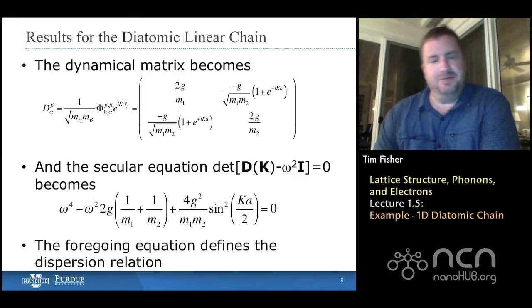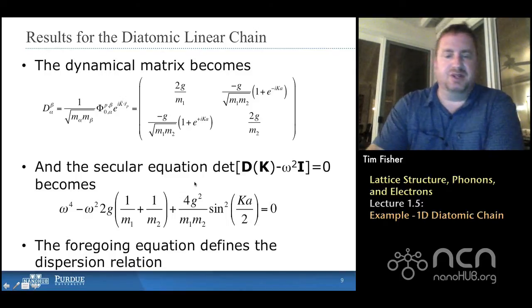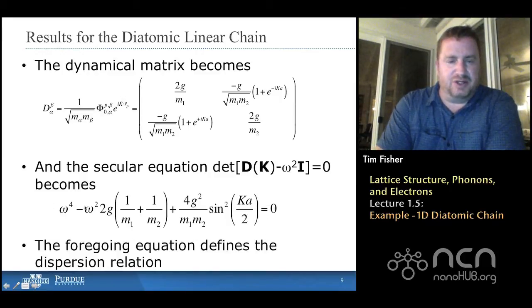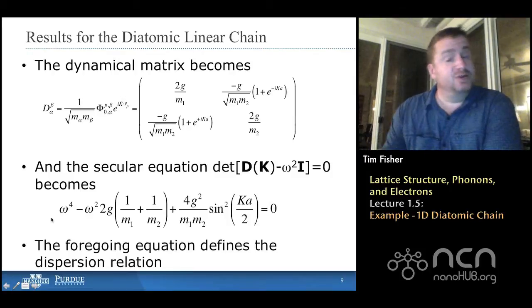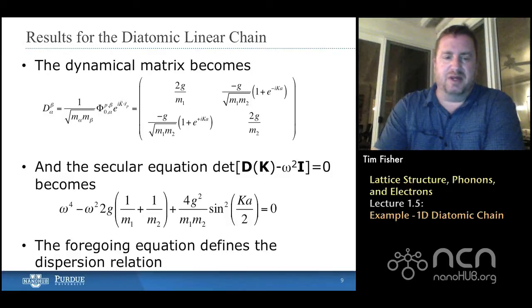What we want to do now is to apply this secular equation. The determinant of the dynamical matrix minus our eigenvalue, that's omega squared, times the identity matrix. That's how we're going to solve for frequency, omega, in terms of k, wave vector k. And we find that we have a quartic equation, omega to the fourth, because, again, we have a two-by-two matrix having omega squared on the diagonal. So, we're going to have an omega to the fourth. This is really our dispersion relation.